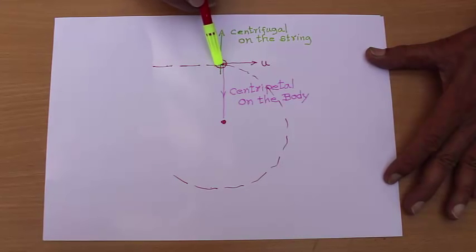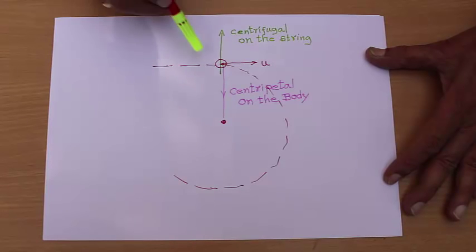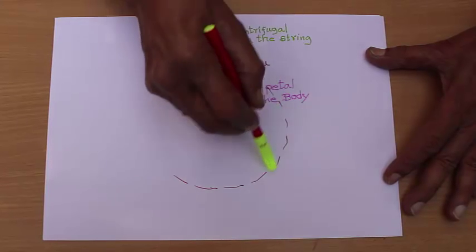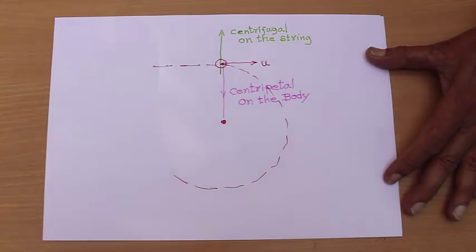In that case, if this is the initial velocity of the body and the force is acting in this direction, it should start moving in a circle like this and not like this. Why is this?